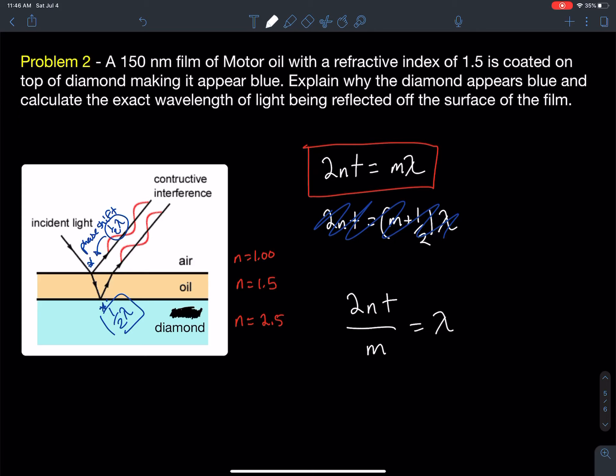Now for the thinnest thickness of that oil, we would say that m can be 1, 2, or 3. But for the thinnest thickness, I would select 1 where m equals 1. So 2 times a refractive index of 1.5 times a thickness of 150 nanometers divided by 1 will be my wavelength.